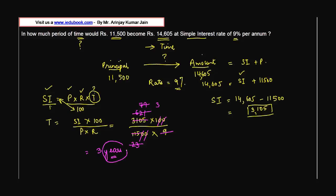The answer is 3 years. Note that time in the simple interest formula is always calculated in years. So in 3 years, a principal of ₹11,500 will become ₹14,605 at 9% per annum simple interest.